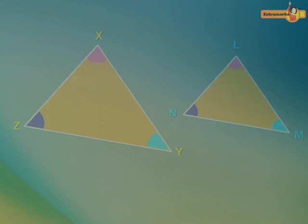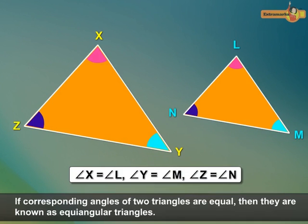Note that if corresponding angles of two triangles are equal, then they are known as equi-angular triangles.